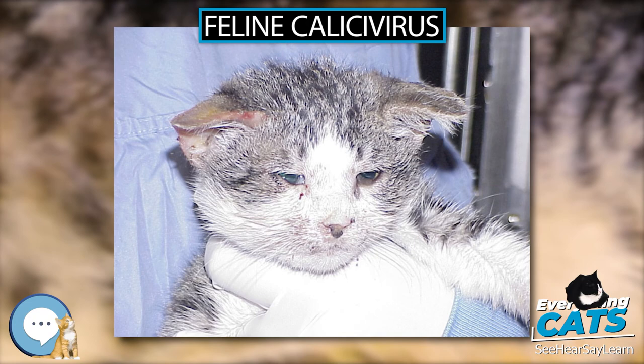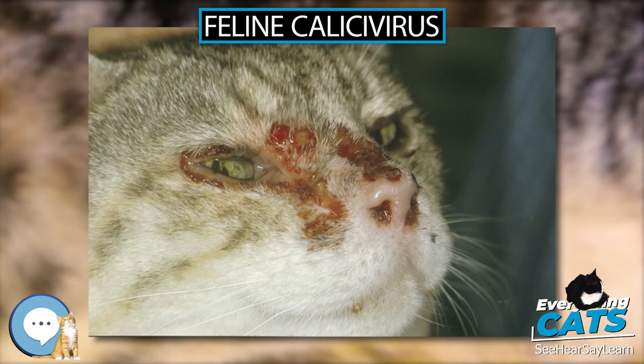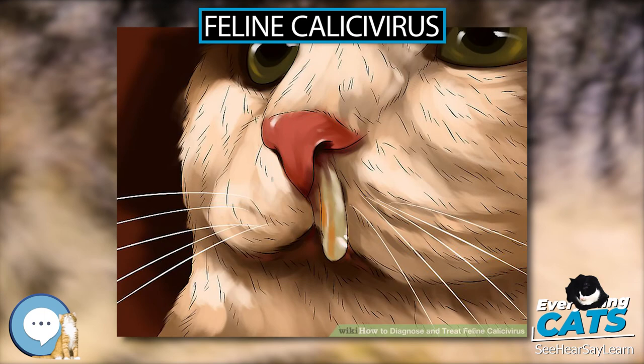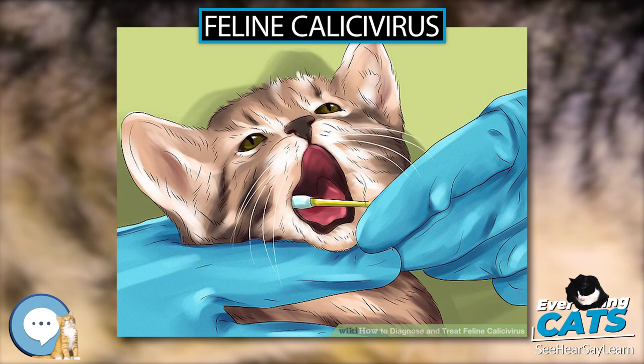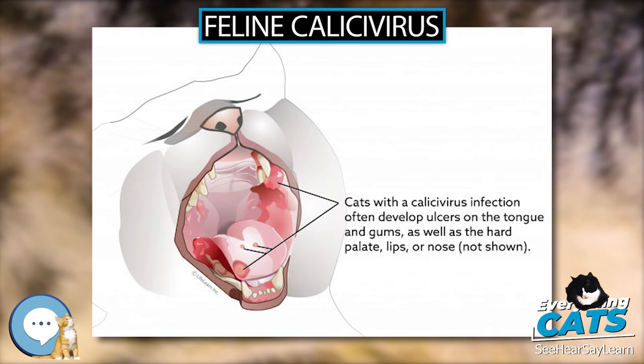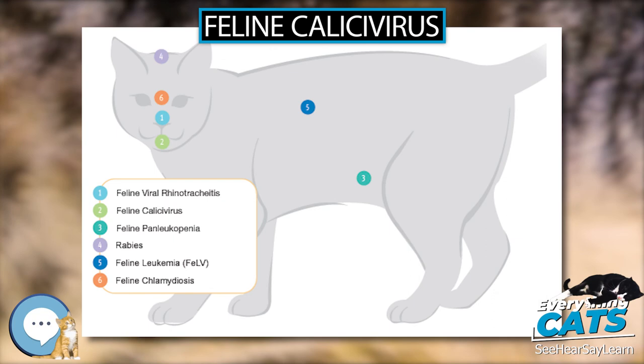An outbreak of VS-FCV at a Humane Society in Missouri in 2007 led to the euthanasia of the entire cat population — almost 200 cats — to contain it. FCV may survive several days to weeks in a dry environment and longer in a cooler, wet environment. Quaternary ammonium compounds are not thought to be completely effective, but a 1:32 dilution of household bleach used with a detergent and sufficient contact time does seem to kill the virus.